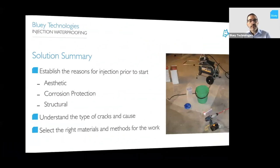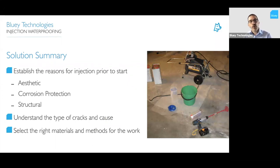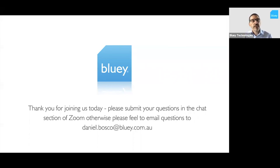In summary: the key thing that often gets missed is establishing the reason for injection before starting — is it aesthetic, corrosion protection, or structural? You have to understand the type of cracks and their cause, then select the right materials and methods. Understanding all of those things will help you select the right methods for concrete repair. This has been an introduction to concrete repair — future sessions will cover more practical injection details. If you have questions, feel free to type them in the group chat or email me directly.